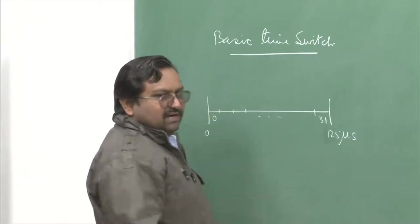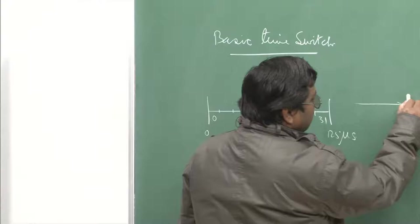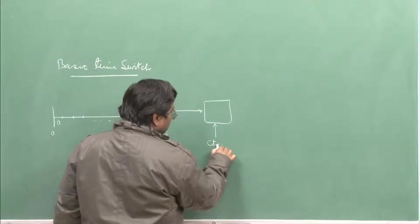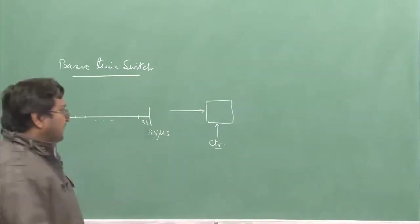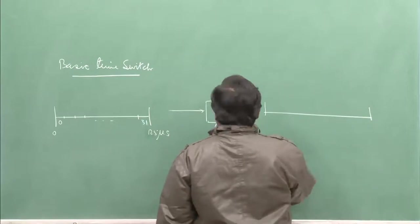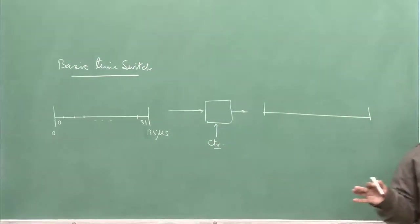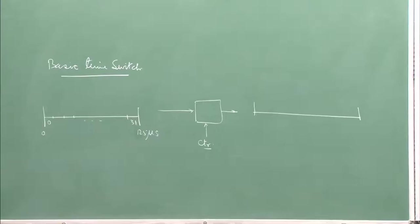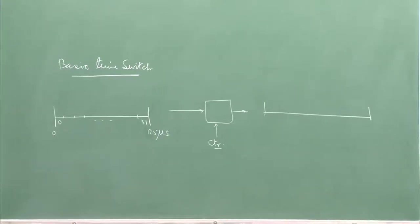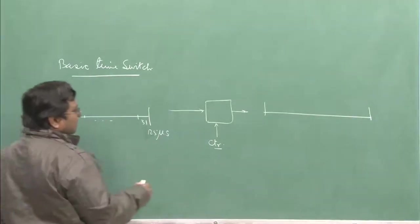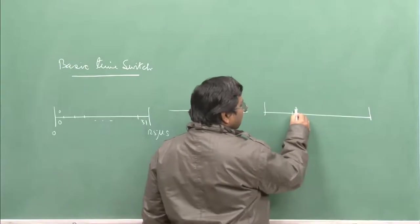Usually the idea is: when you get such an E1 frame, you push it into a time switch. There will be some controller and control action. At the end, you again get one E1 frame coming out. Framing and signaling — slots 0 and 31 — will be signaling and framing slots. The remaining slots get switched. Data at slot 0 might end up at slot 3, for example — time slots are being interchanged with each other.